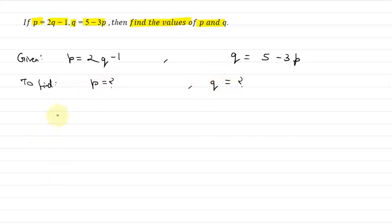Here we have the first equation, p equals 2q minus 1, which I'll label as equation 1. The second equation is q equals 5 minus 3p, which I'll label as equation 2. Now what we'll do is take the first equation p equals 2q minus 1, and put this value of p into the second equation.